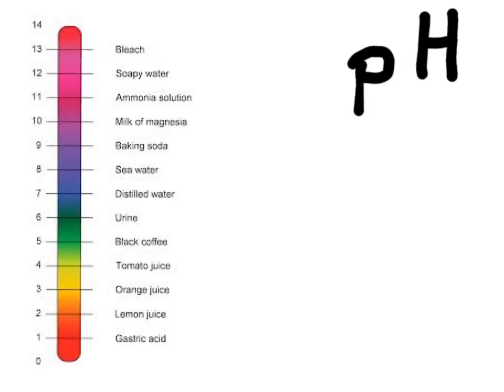In this video we are going to talk about pH. pH is a way to measure the acidity or basicity of a solution. pH is a scale that goes from 0 to 14.